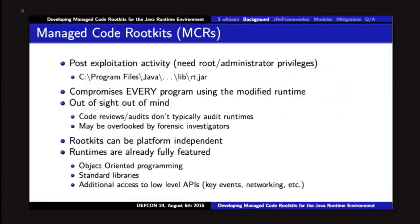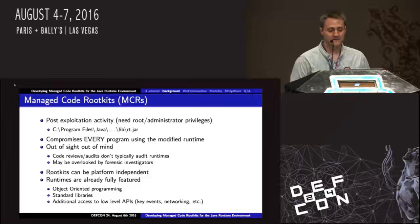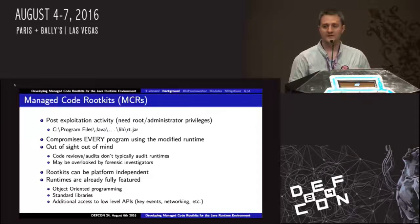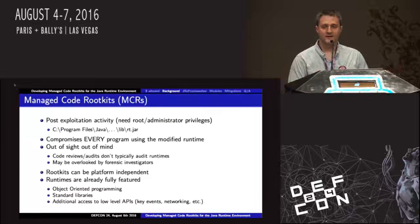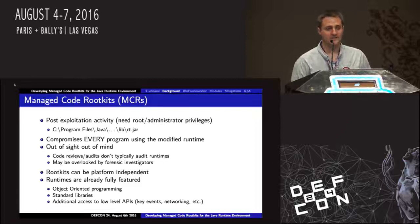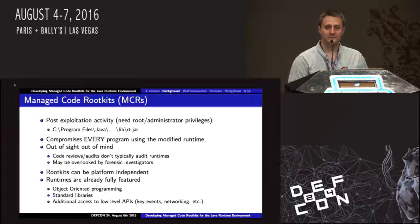There are a few advantages. First, this is a post-exploitation activity — you've already gained permission on the box and can write to usually protected directories. Program Files on Windows is where they store the Java runtime. The important part is that we're not manipulating the program itself; we're manipulating the runtime, so we can affect every program running. That Hello World program — we didn't touch it at all. We touched the runtime and the program behaved differently. Typically, we audit the application code but not the runtime, so someone might overlook this. We also have lots of contextual information — if we want to grab a password field, we don't need a full keylogger; we could keylog only password fields. We can write object-oriented rootkits using the full standard library with access to key events, networking, and more.